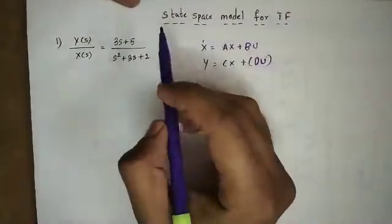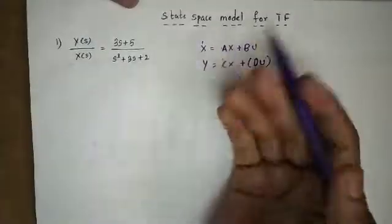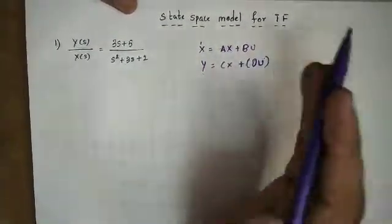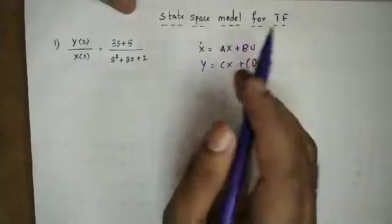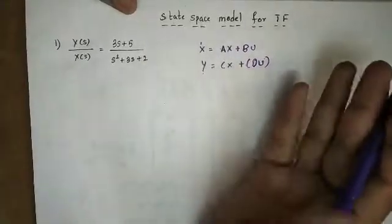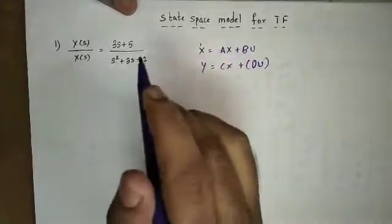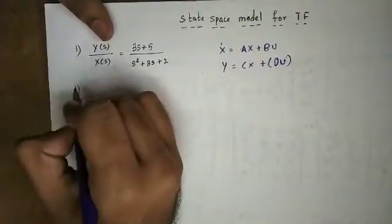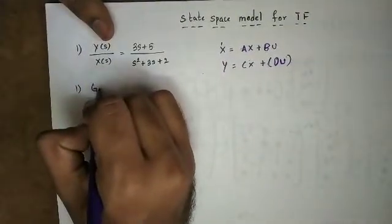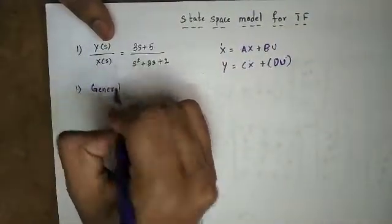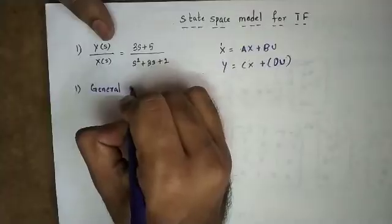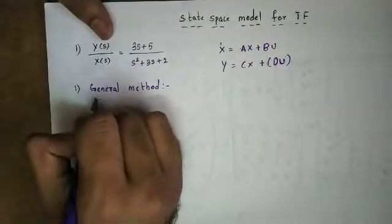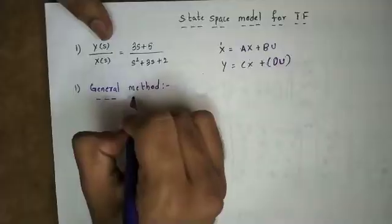First, the General Method. In gate exams, maximum 99% use a shortcut. Just to make an idea, I will talk about the general method first — this is the correct method. So I will discuss two methods.